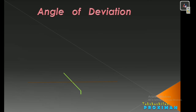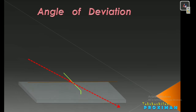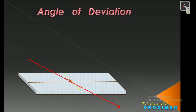Now let us look at the important topic of today's session — Angle of Deviation. Whenever an incident light ray travels in one direction without any obstacle, it travels in the same path. But when we place a reflecting surface or mirror, it gets reflected back in some other direction. We need to find how much angle it has bent or changed from its original direction. That is the Angle of Deviation — how much the ray is deviated from its original path.